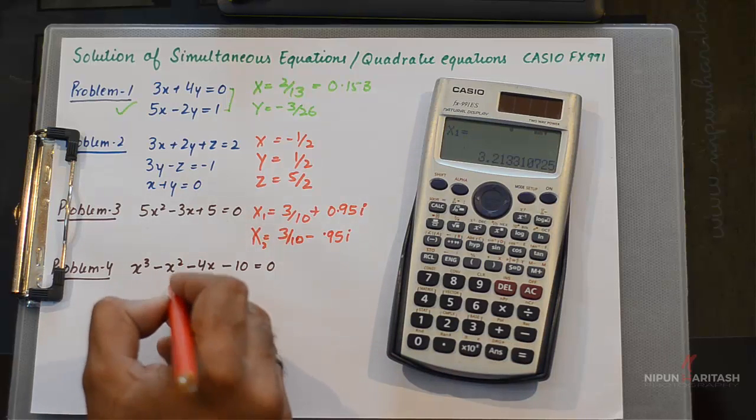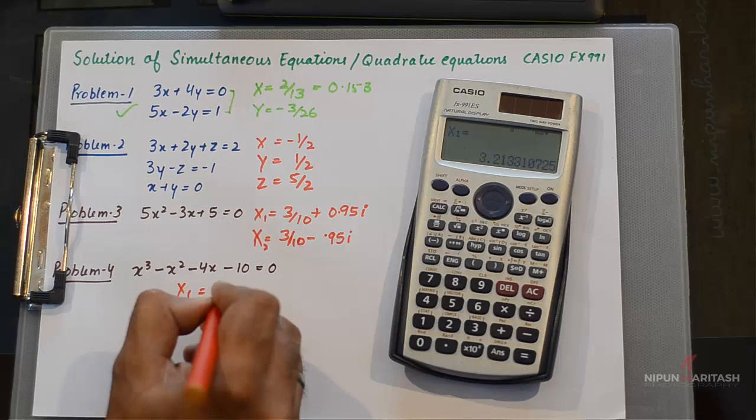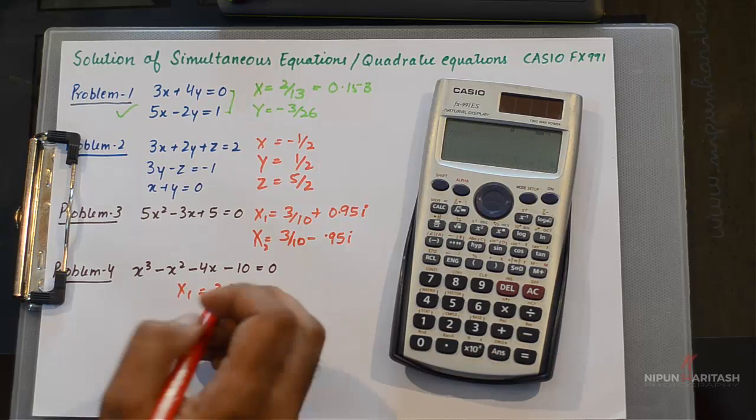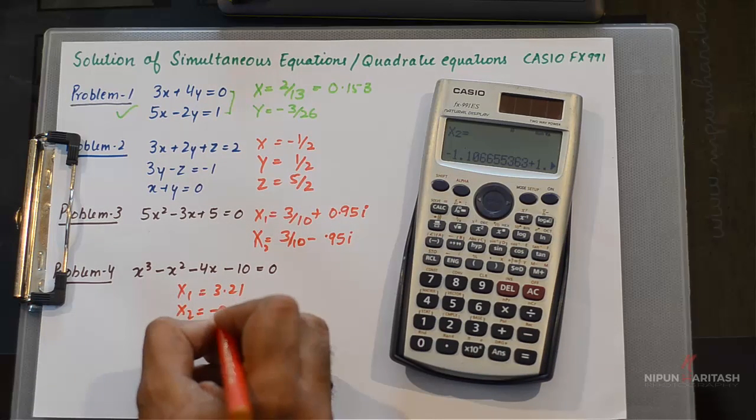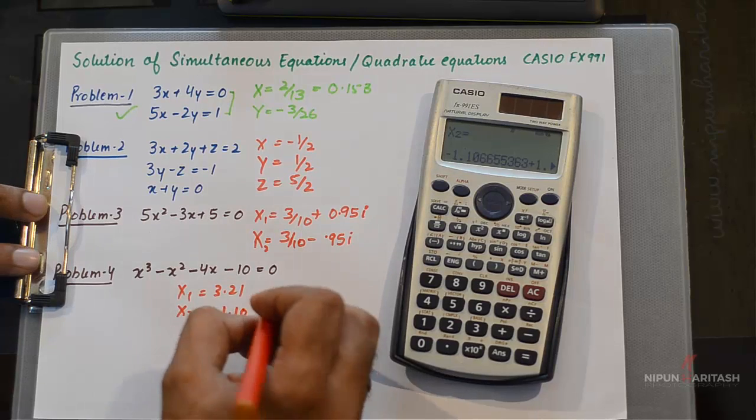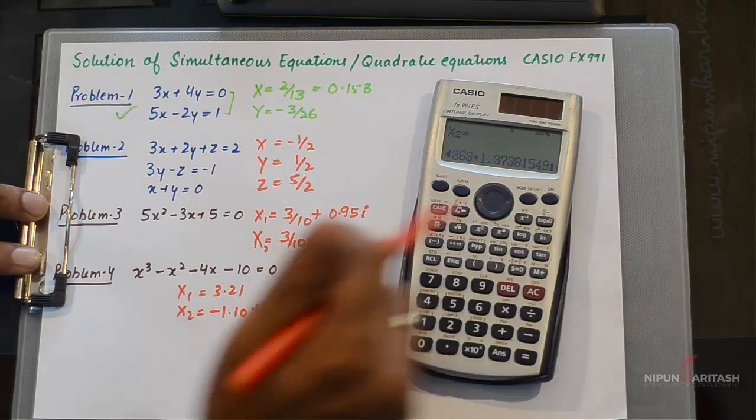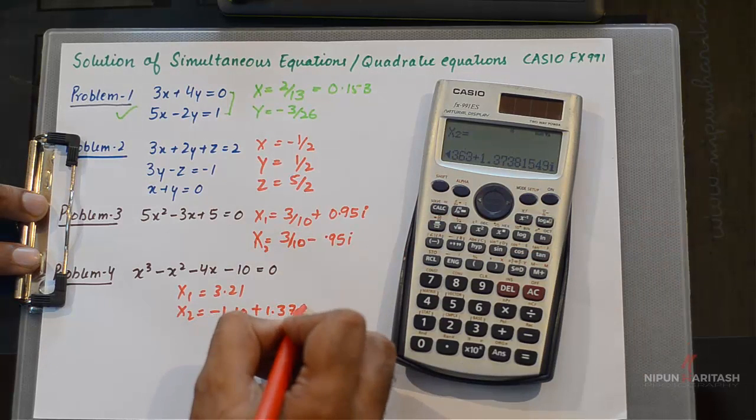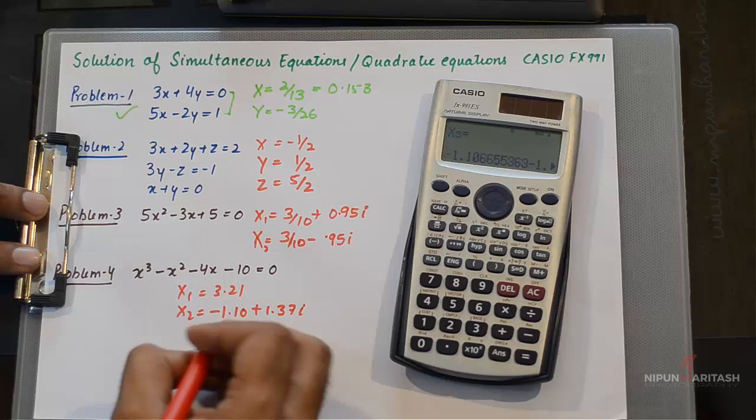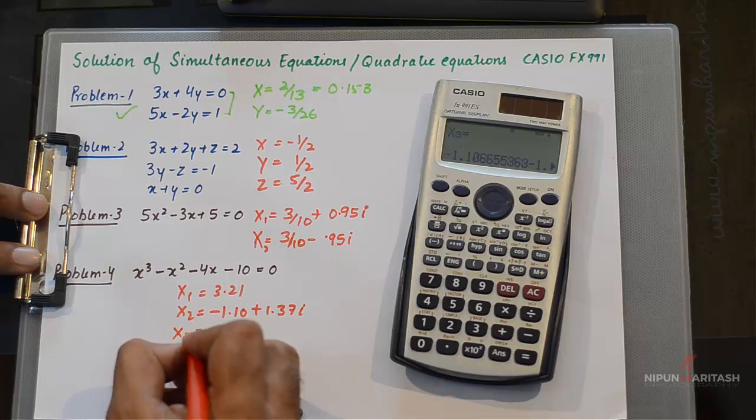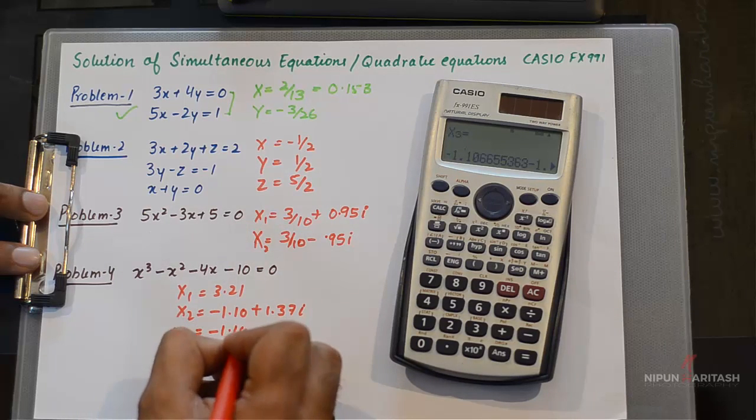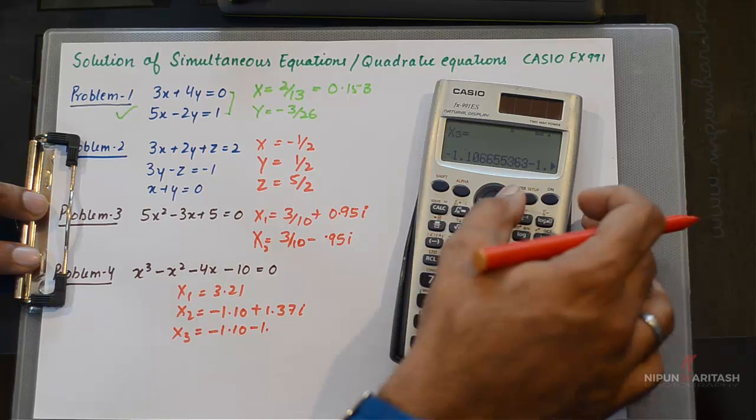So I've got X₁ as 3.21, X₂ as -1.10 + 1.37i, and X₃ as the complex conjugate of this number.